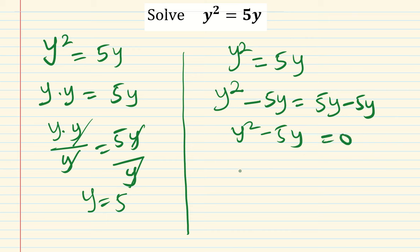Here we have y² - 5y = 0. So the next thing to do now is factorize. What's common is y, so y(y - 5) = 0.